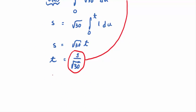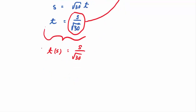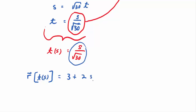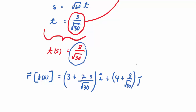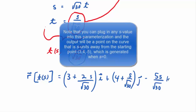Substituting T equals S over root 30 into R of T gives R of S equals (3 plus 2S over root 30)I plus (4 plus S over root 30)J minus (5S over root 30)K. That is the arc length parameterization of the curve — R expressed as a function of the arc length parameter S.